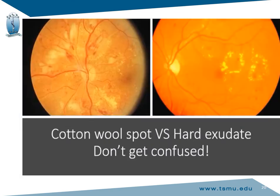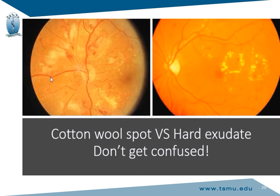It's important not to confuse hard exudates with cotton wool spots. Hard exudates are made of lipids, very yellow in colour with distinct margins, often found close to the macula, resulting from blood vessel leakage. Cotton wool spots are made of axonal debris, more prominent around the optic nerve, lighter or white in colour, billowy like clouds without distinct margins, and result from vessel occlusion rather than vascular leakage.